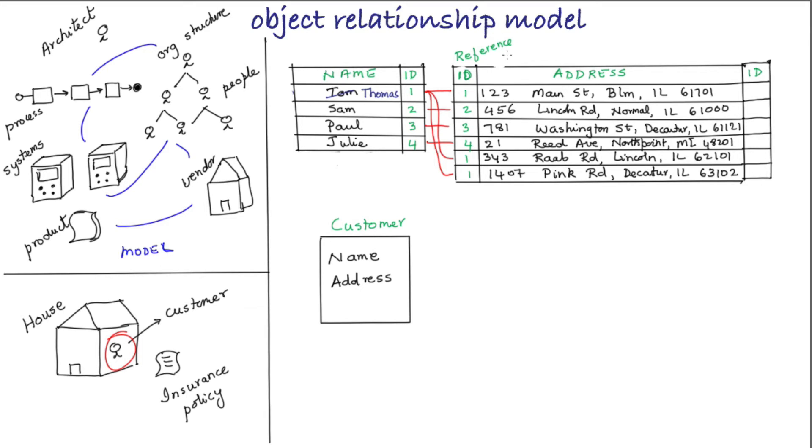This reference is called a foreign key in database lingo. In the OR space, the equivalent representation is to have two objects, customer and address, with a one-to-many relationship between the two. The customer object can have attributes such as name and date of birth, while the address object can have attributes such as house number, street, city, state, and zip.